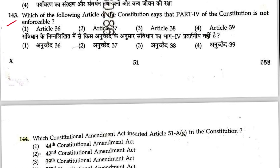Question 143: Which article of the Constitution says Part IV (Directive Principles) is not enforceable? This is enshrined in Article 37. Answer accordingly.